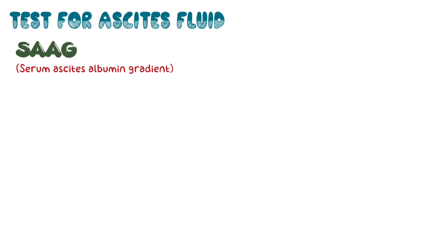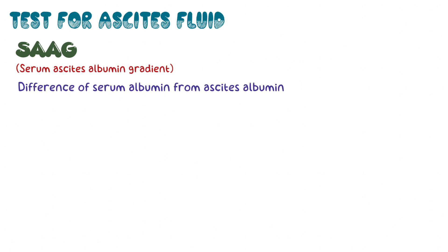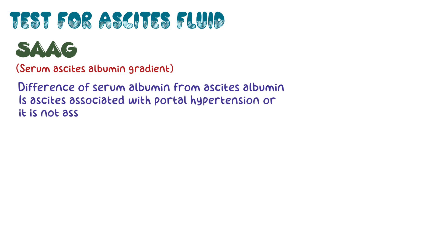The test for ascites fluid is the Serum Ascites Albumin Gradient, which is also called the SAAG test. In this test, we see the difference between serum albumin and ascites albumin. We use this test to determine whether the ascites is associated with portal hypertension or not.